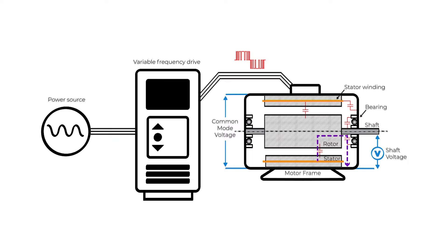Common mode voltage generates an electric charge stored in the parasitic capacitance between the rotor and the stator. When this charge gets high enough, it breaks the dielectric insulation and is discharged through the insulation of the bearing.